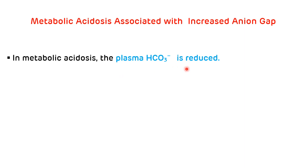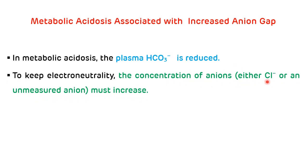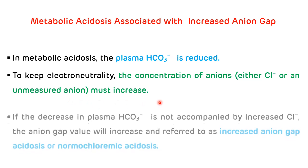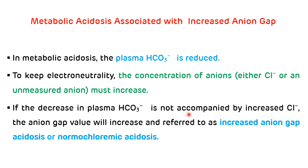First, we will see metabolic acidosis associated with increased anion gap. In metabolic acidosis, there is a decreased plasma level of bicarbonate. To maintain electroneutrality, the concentration of anions — either chloride or an unmeasured anion — must increase. If the decrease in plasma bicarbonate is not accompanied by increased chloride, the anion gap will increase, and this is referred to as increased anion gap acidosis or normochloremic acidosis.